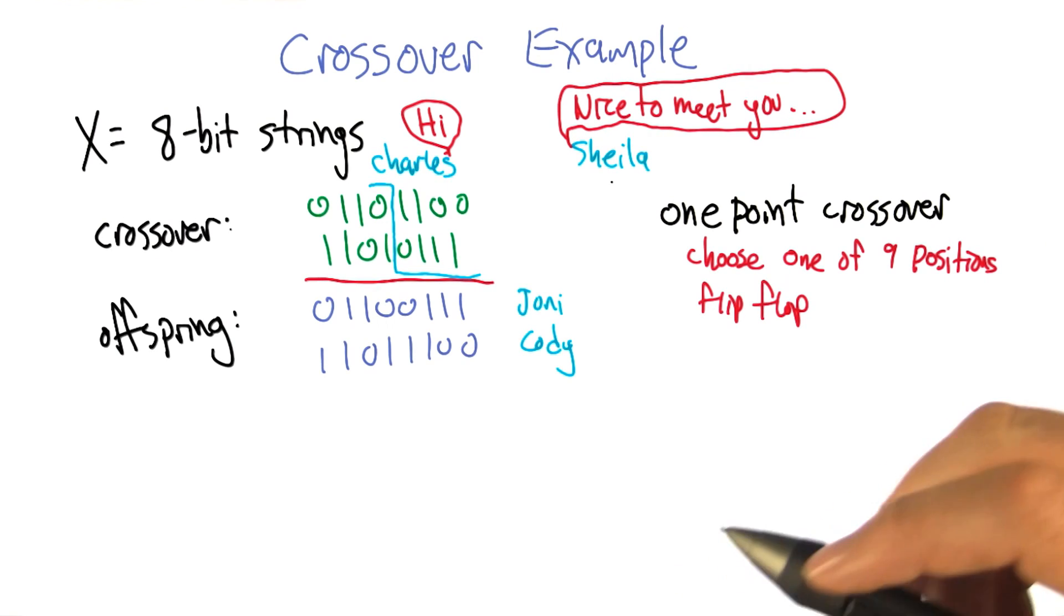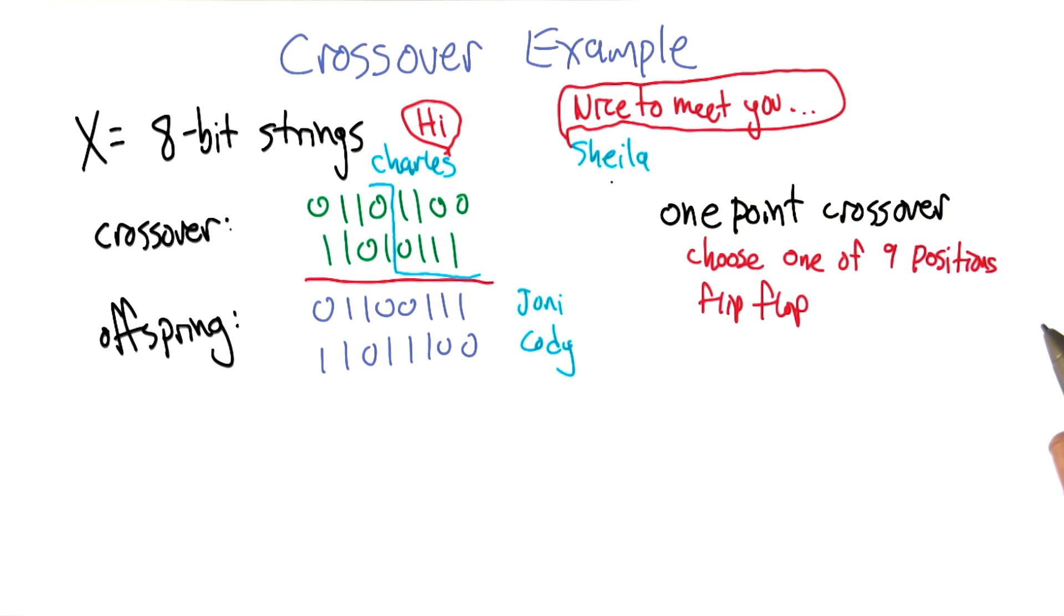I see two kind of assumptions built there. So maybe that is an inductive bias, or a bias of some sort. So one assumption is that locality of the bits matter.